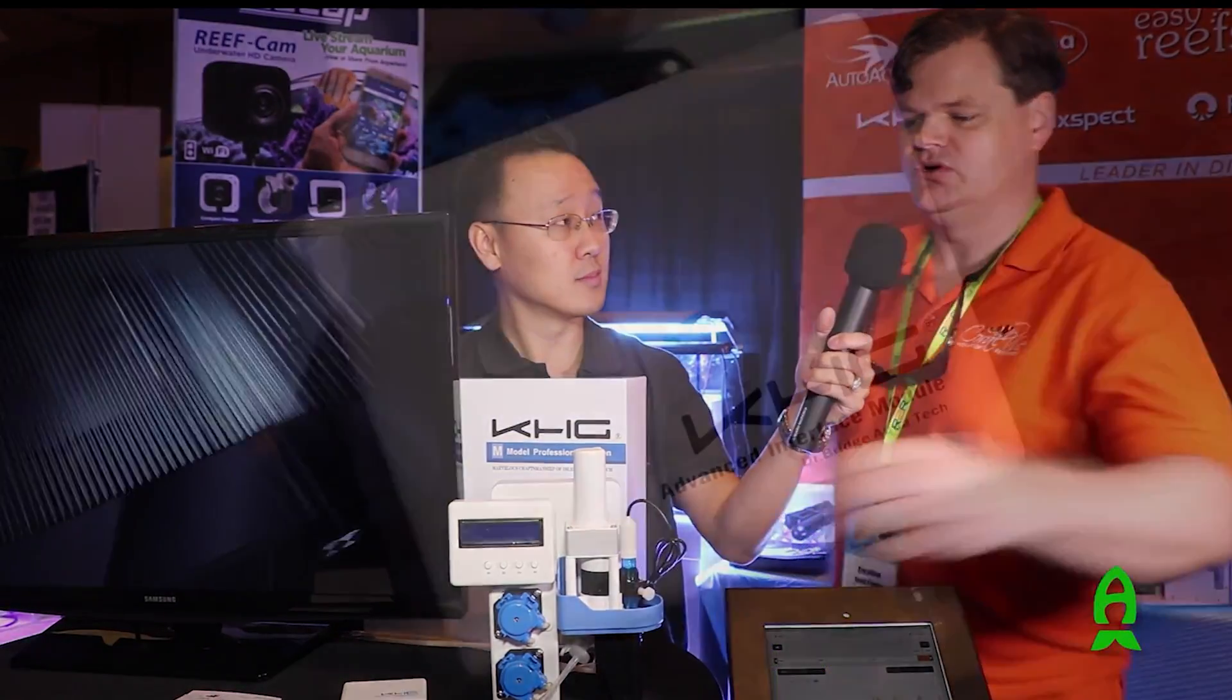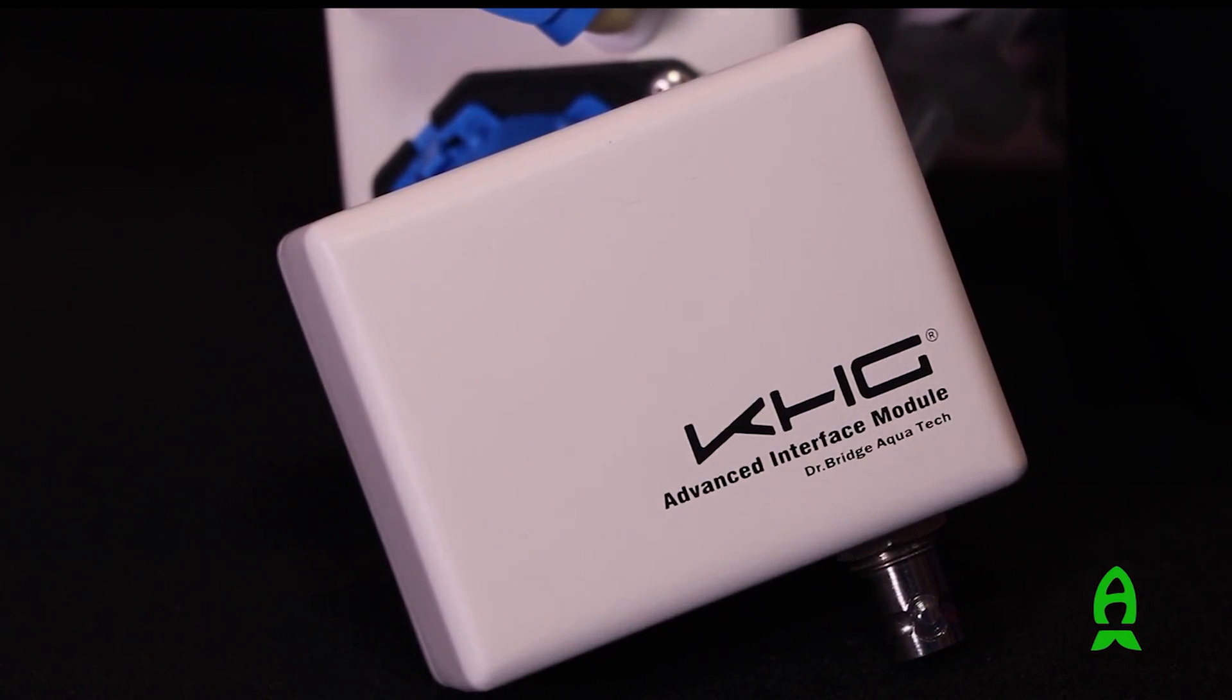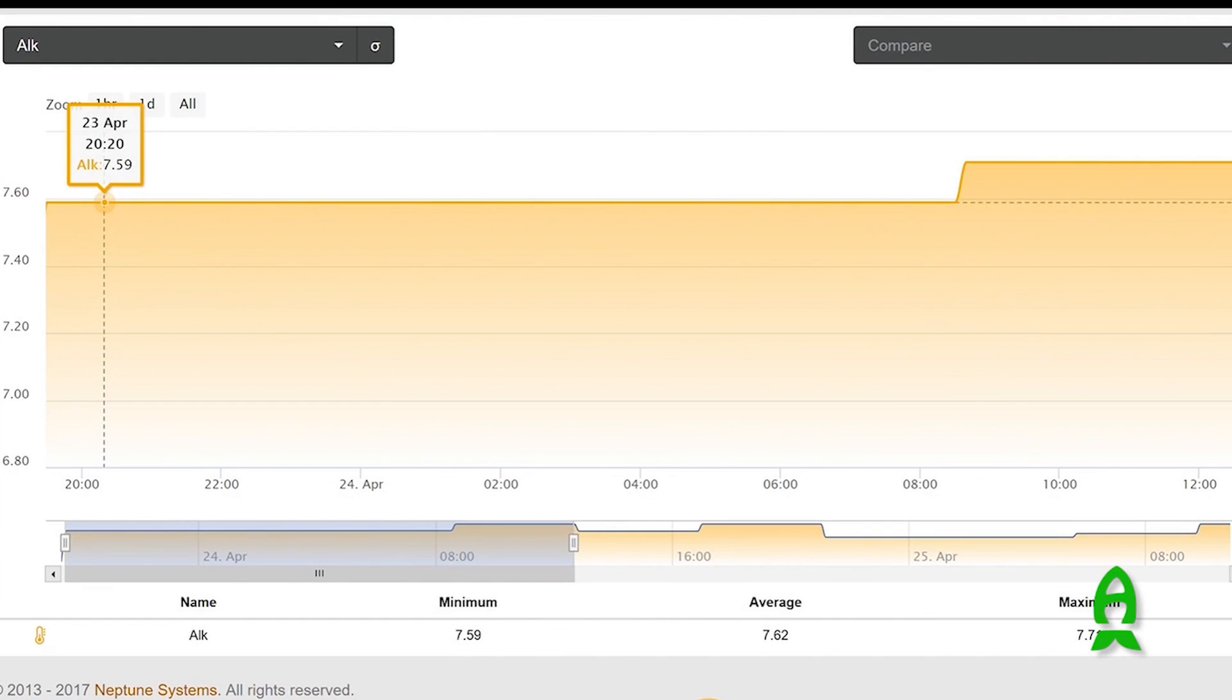When this unit first came out, within the first year, they released the AIM module, which integrates KH Guardian to third-party controllers to give alkalinity reading on chart. And I've had this on my Apex years ago, giving me constant updates.